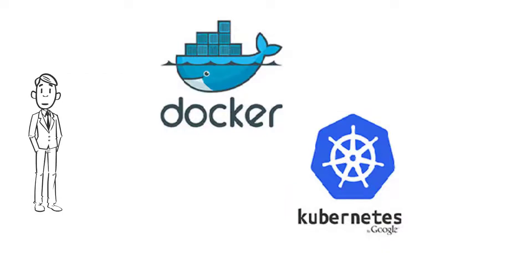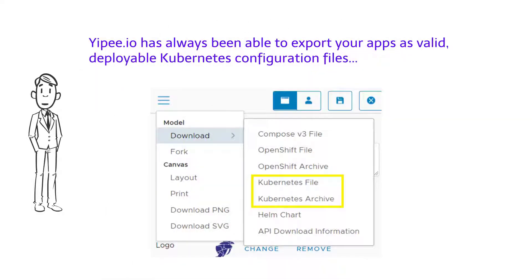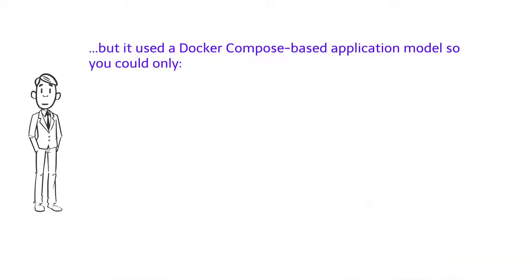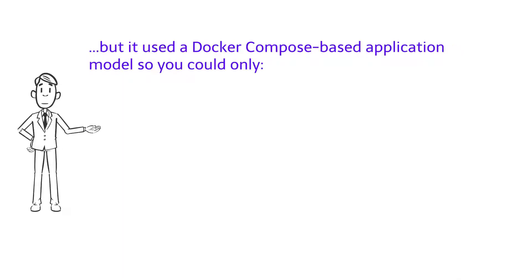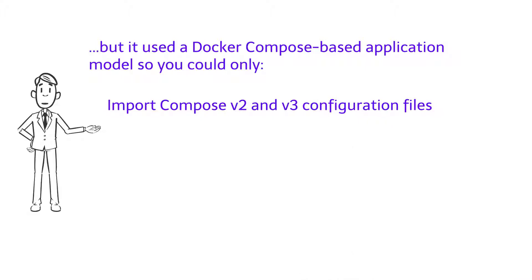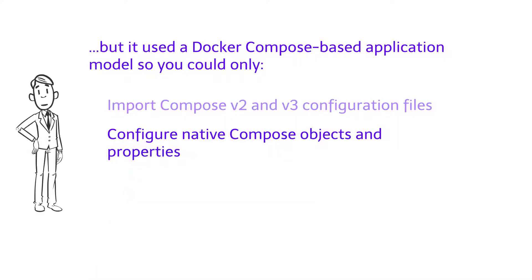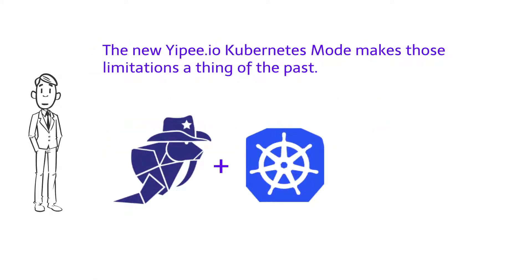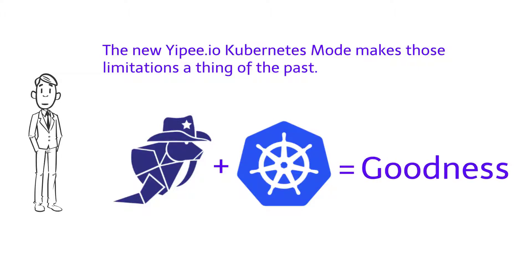but it's much more complex to implement. YPIO has always been able to export your apps as valid deployable Kubernetes files, but used a Docker Compose based application model, so you could only import Compose V2 and V3 configuration files and configure native Compose objects and properties. The new Kubernetes mode available now in open beta makes those limitations and the complexity of configuring a Kubernetes app a thing of the past.